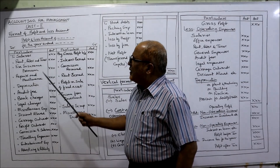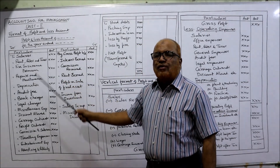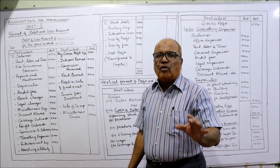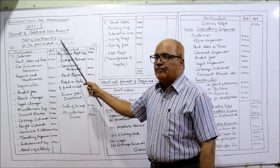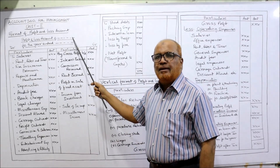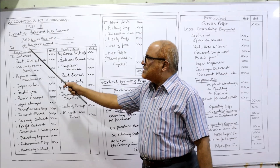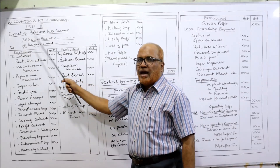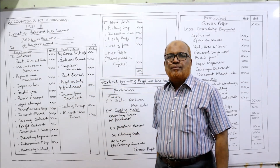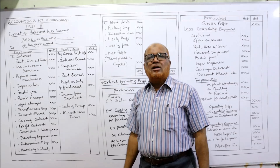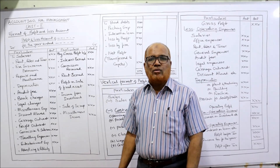For the format of the profit and loss account, first of all write the heading — the name of the company, then 'Profit and Loss Account', then 'For the year ended'. The account has a debit side and a credit side. On the credit side we take the gross profit brought down from the trading account.